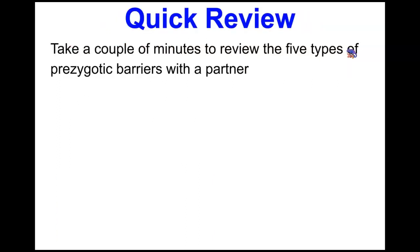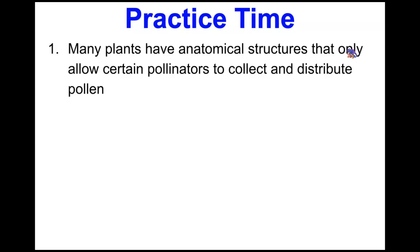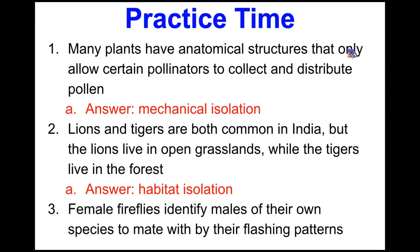Quick review: let's look at examples to determine which type of pre-zygotic barrier applies. First: many plants have anatomical structures that only allow certain pollinators to collect and distribute pollen — that would be mechanical isolation. Second: lions and tigers are both common in India, but lions live in open grasslands while tigers live in the forest — that is habitat isolation. Third: female fireflies identify male fireflies of their own species by their flashing patterns — that is behavioral isolation, and a great example of bioluminescence.